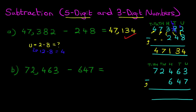We'll show the workings out as well. Starting on the right hand side, the units is three minus seven. Now three minus seven is something we cannot do because three is smaller than seven. So as in the above example, let's take one from the tens. Cross out six — six minus one is five — and the one we've taken we're going to move across to the units. So the units has now become thirteen minus seven. Thirteen minus seven is six.